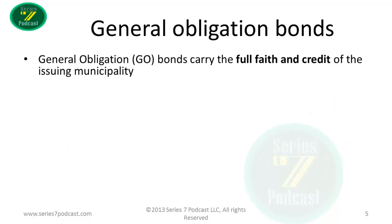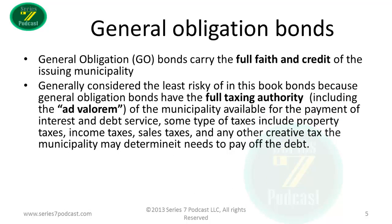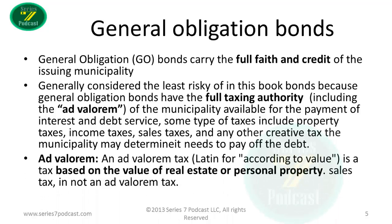There are two types of bonds. General obligation bonds are considered the highest rated bonds as a general rule, and they carry the full faith and credit of the issuing municipality. They're considered the least risky because general obligation bonds have the full taxing authority — including the ad valorem — of the municipality available for payment of interest and debt service. Types of taxes include property taxes, income taxes, and sales taxes. The term ad valorem is Latin for 'according to value.'